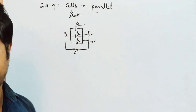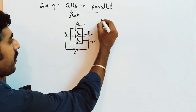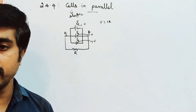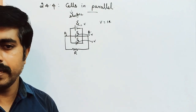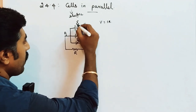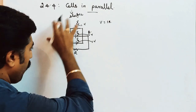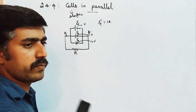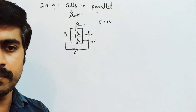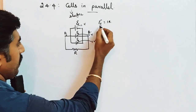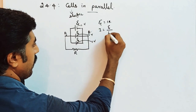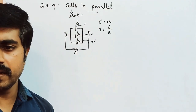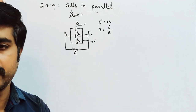By Ohm's law, V equals IR. In a parallel combination, each component carries the same amount of potential. So if you have the same EMF — and EMF is nothing but voltage — there is no potential difference between cells connected in parallel. In series there is a potential difference, but in parallel combination there is no potential difference.